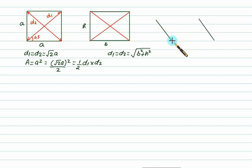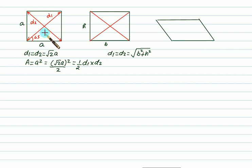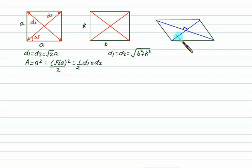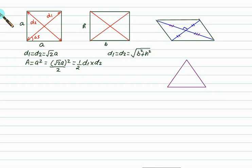For a parallelogram where two pairs of sides are parallel, if we draw the diagonals, they bisect each other — meaning each diagonal is divided into two equal halves at the point of intersection.